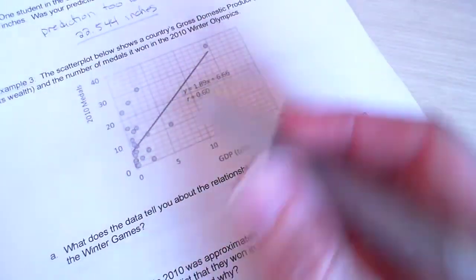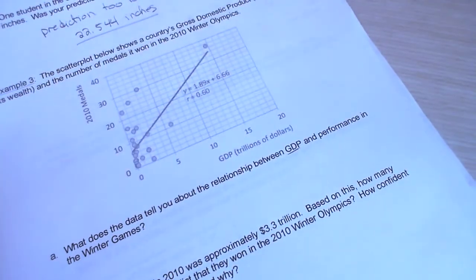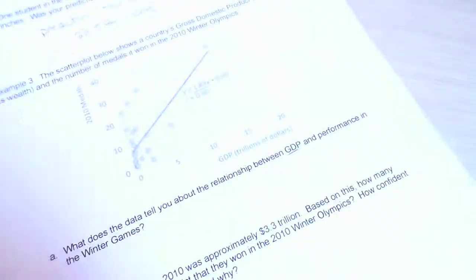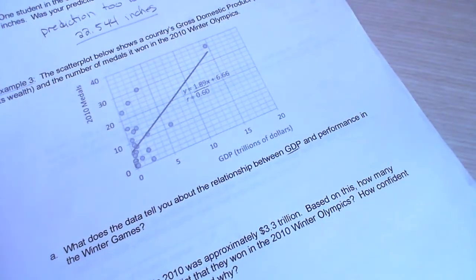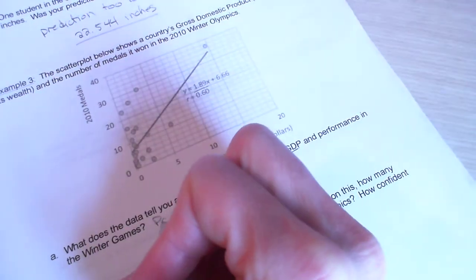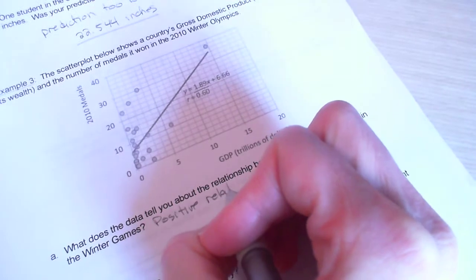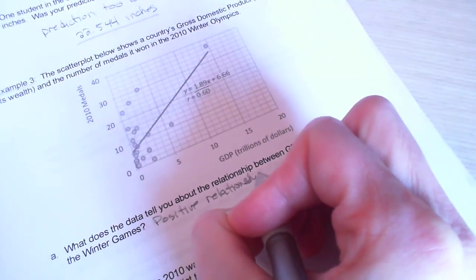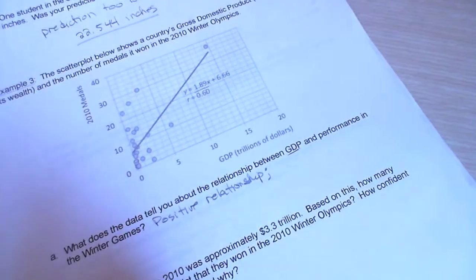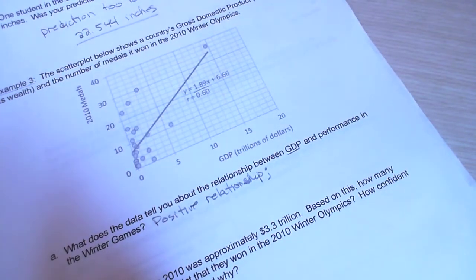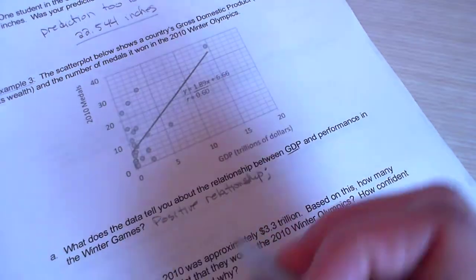Well, we do have a least square regression line on there. And it does have a positive slope. We know that it's positive because our slope is positive right there. So, we do know we have a positive relationship. So, countries with higher gross domestic product tend to win more medals.